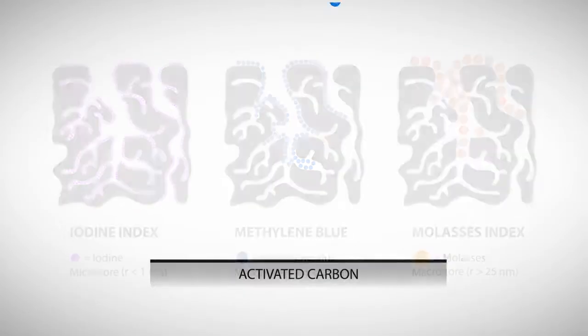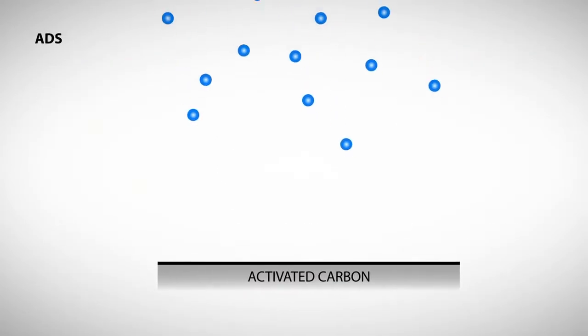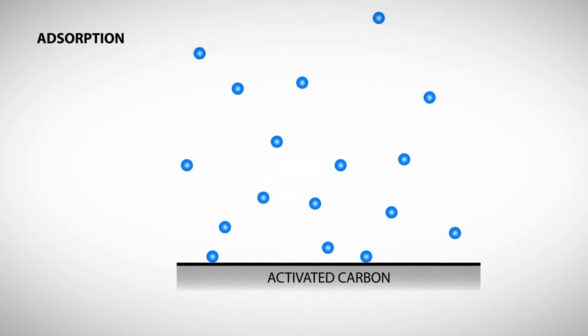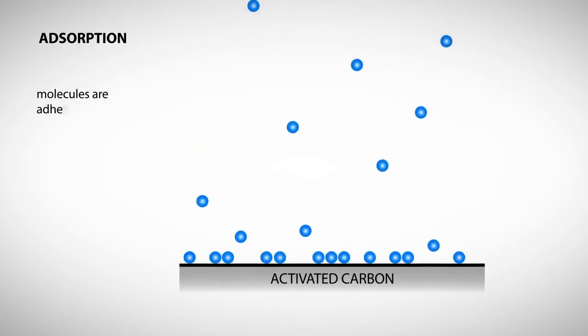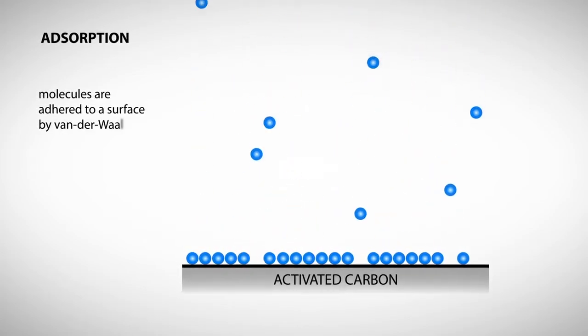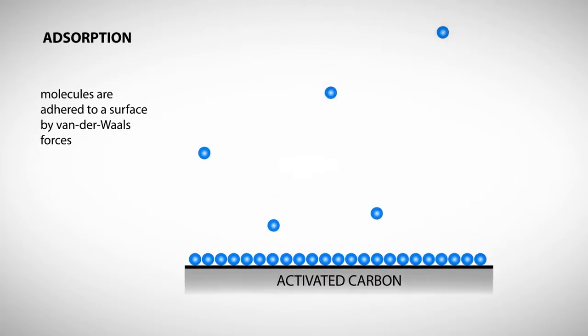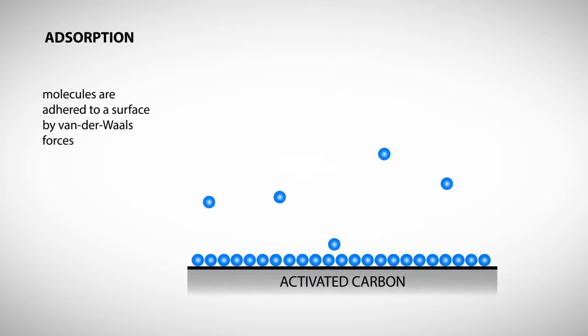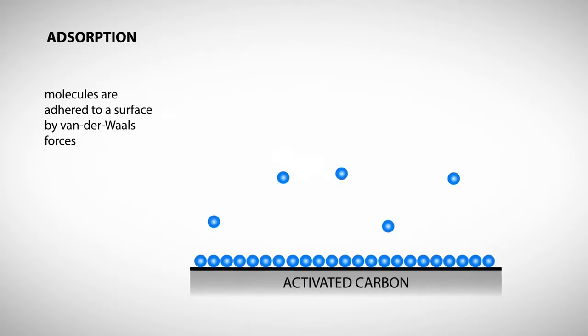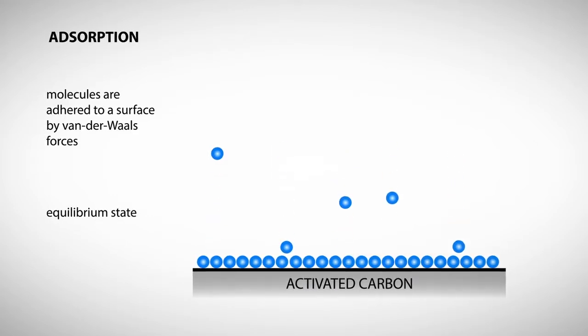Within the pores of the activated carbon, adsorption takes place. Adsorption is when molecules are adhered to a surface by van der Waals forces. The molecules build a film on the adsorbent surface. Once the surface capacity is exhausted, an equilibrium state is reached.